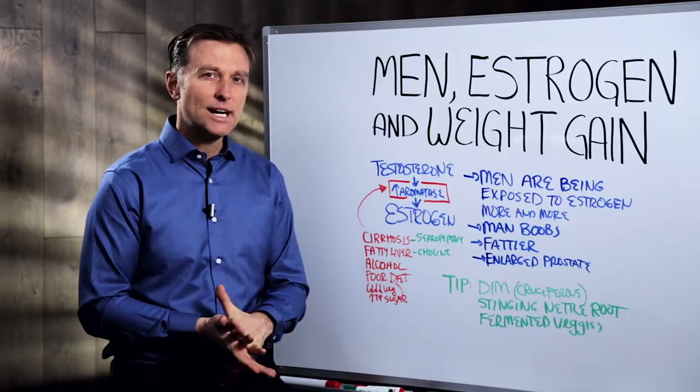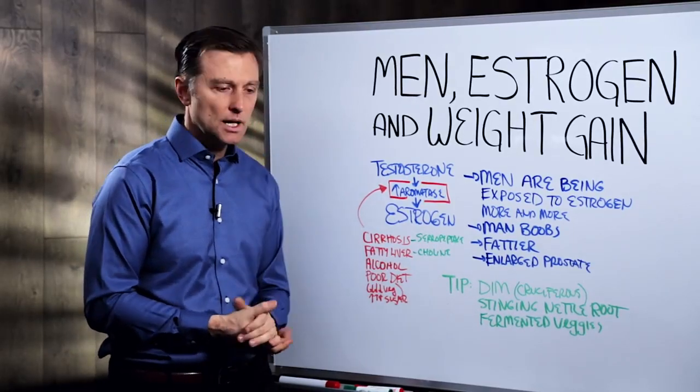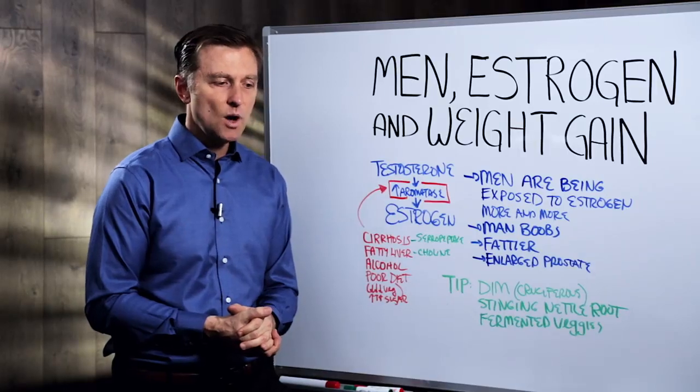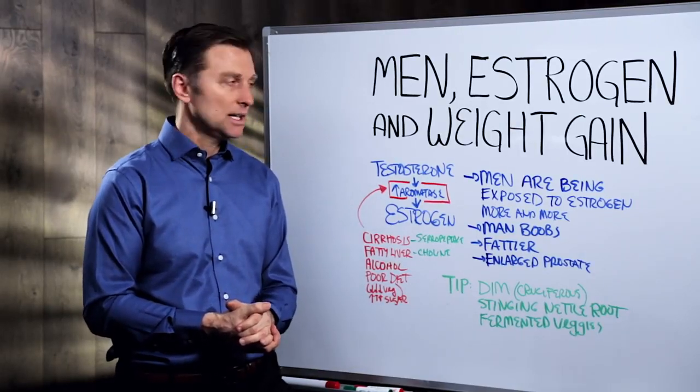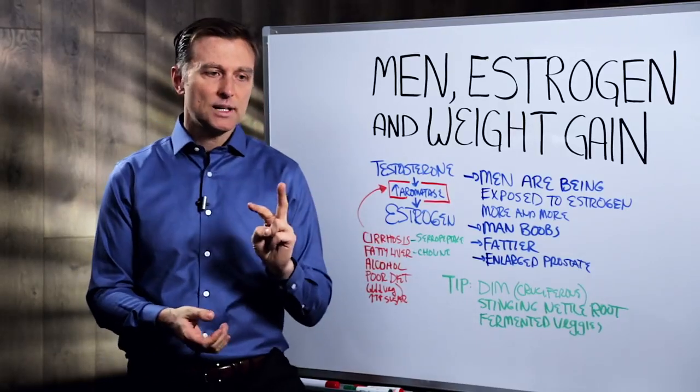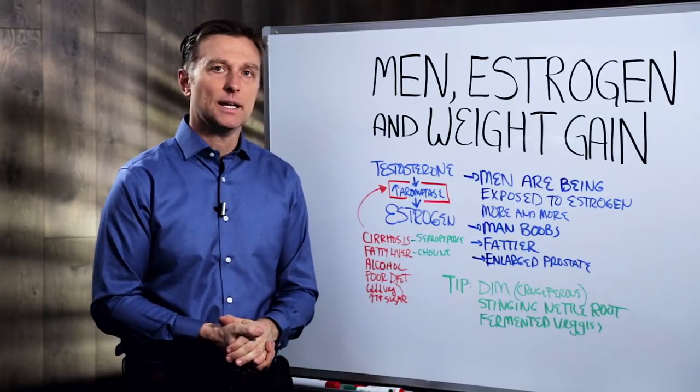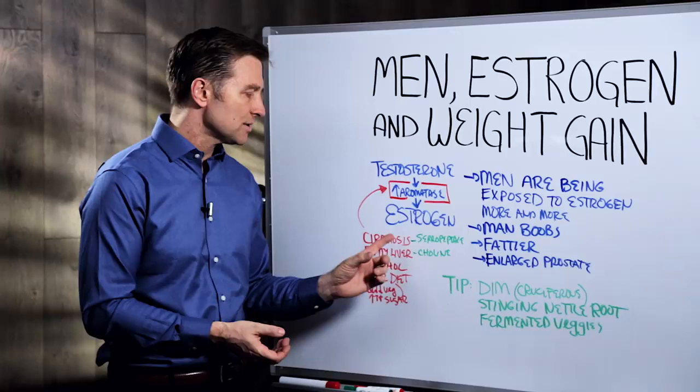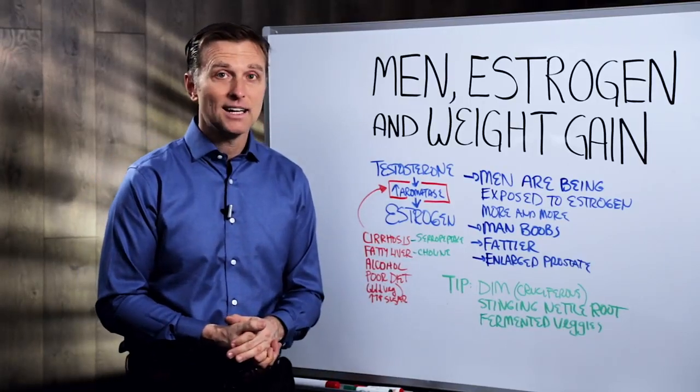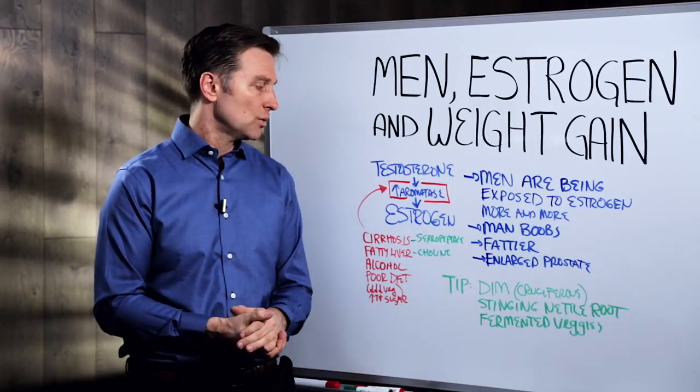There's an enzyme called serrapeptase. Write that down, serrapeptase. If you have cirrhosis, I would get it in 200,000 IUs. I don't have a source. You just have to find it. And you take two on an empty stomach three times per day. That enzyme has a unique property of getting rid of scar tissue and has been really good results with cirrhosis. But you have to also clean up your diet at the same time or it's not going to work.